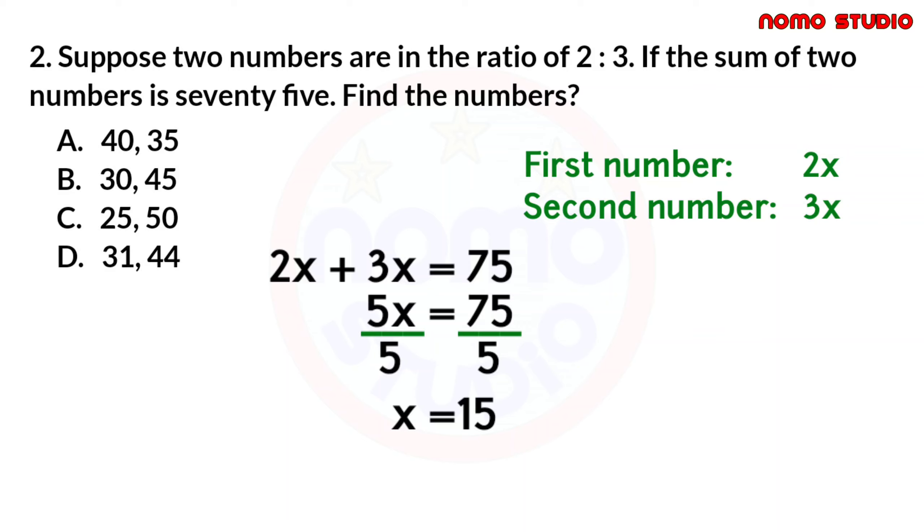And, as we all know, our first number is 2x and our second number is 3x. Therefore, we have to substitute the value of x into these two numbers. Our first number is 2 times 15 and our second number is 3 times 15. Therefore, our first and second number is 30 and 45, respectively. So, the correct answer is letter B.